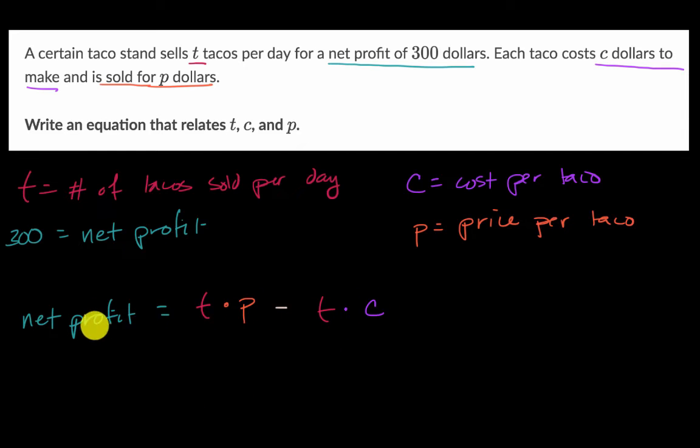Now here I've written everything as variables. Well, I wrote net profit out, but they told us that net profit is equal to 300. So I could write it like this. 300 is equal to T times P, T P minus TC, minus TC.